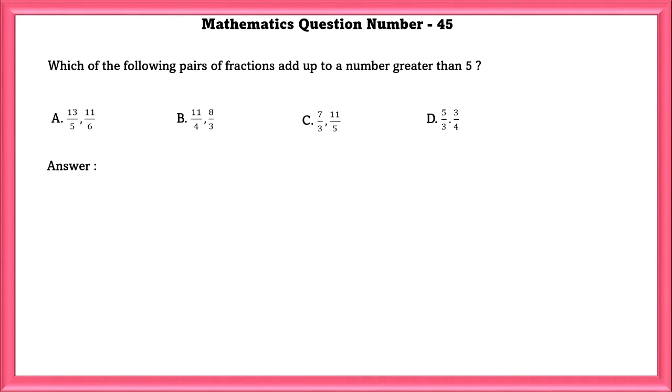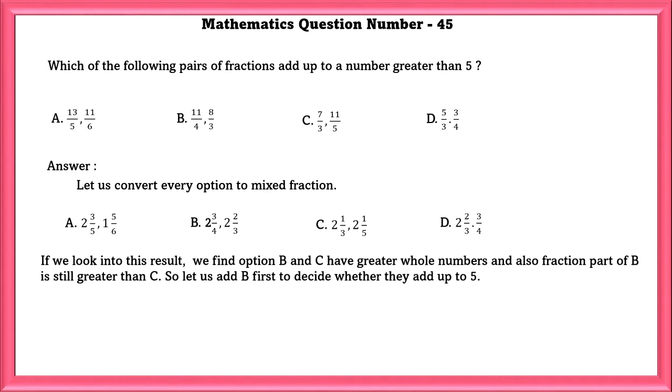Mathematics question number 45. Which of the following pairs of fractions add up to a number greater than the whole number 5? In this, if we take LCM and add every single option, it would take us a lot of time. So we are going to do a short method. First let us convert everything to mixed fraction. If we look into the result, we find option B and C have greater whole numbers. And also fraction part of B is still greater than C. So let us add B first to decide whether they add up to 5. Yes, 5 by 12 is the answer. So it is greater than 5. So the answer is B.